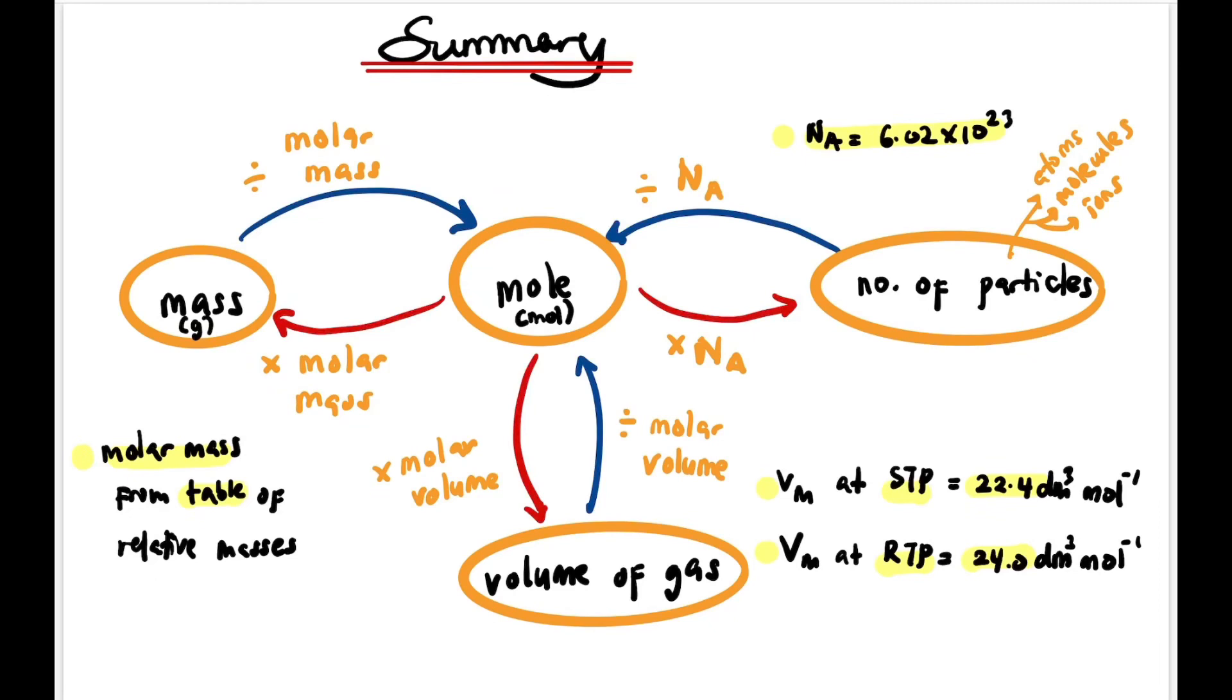So this is the summary of this subtopic. Mass in grams converts to mole divided by molar mass, then times with NA (Avogadro's number) you get number of particles. Mass to mole is bridged by molar mass, mole dengan number of particles dihubungkan dengan Avogadro's number, and mole dengan volume of gas pula dihubungkan melalui molar volume. Apa-apa kena lalu mole. Molar mass we get from the table of relative mass, molar volume depends on condition, and NA is always 6.02 × 10²³.